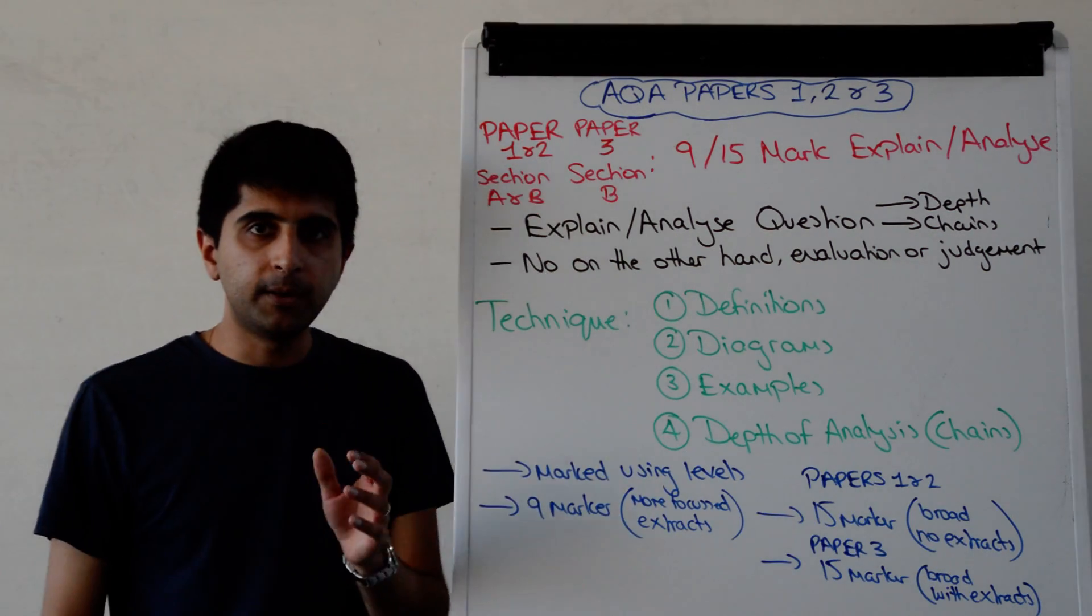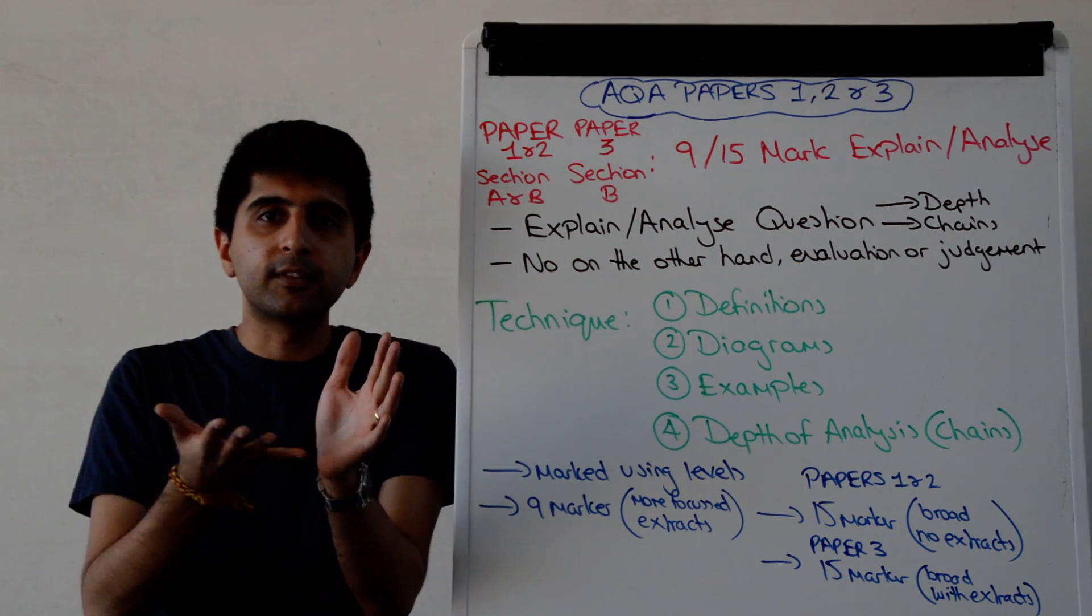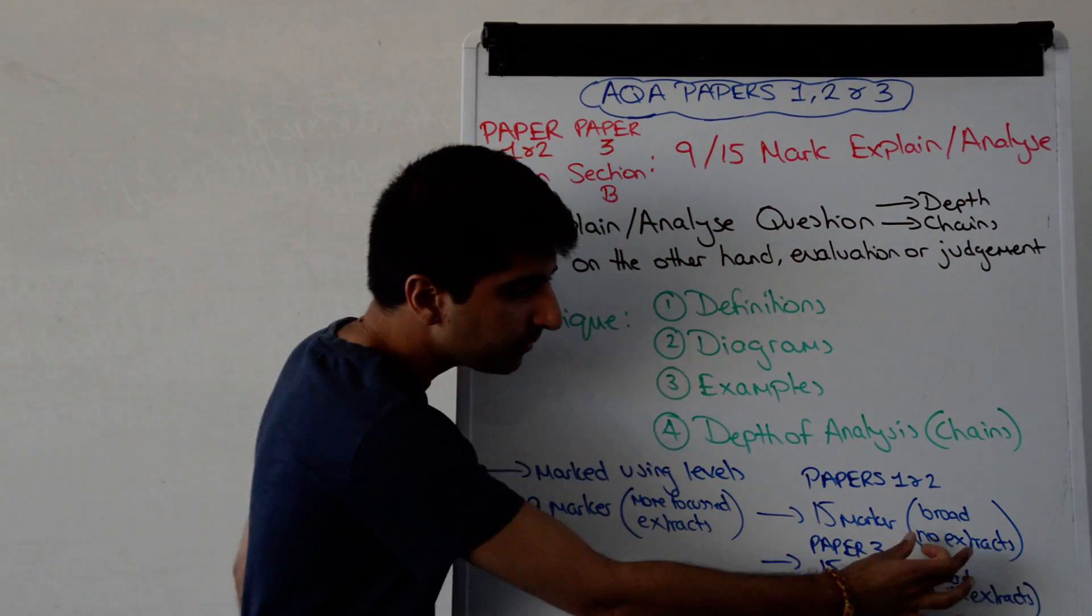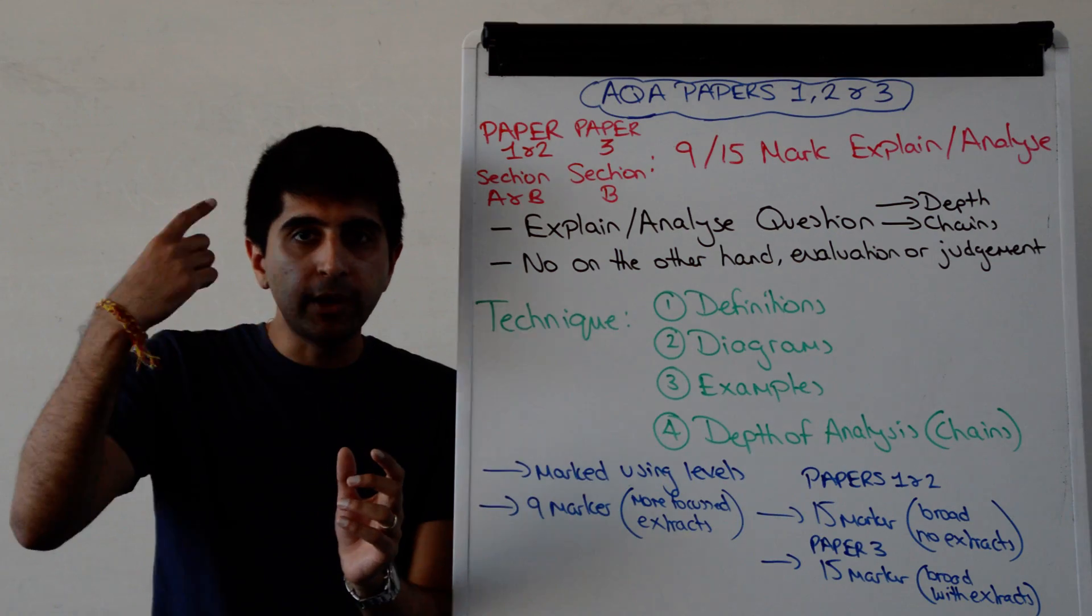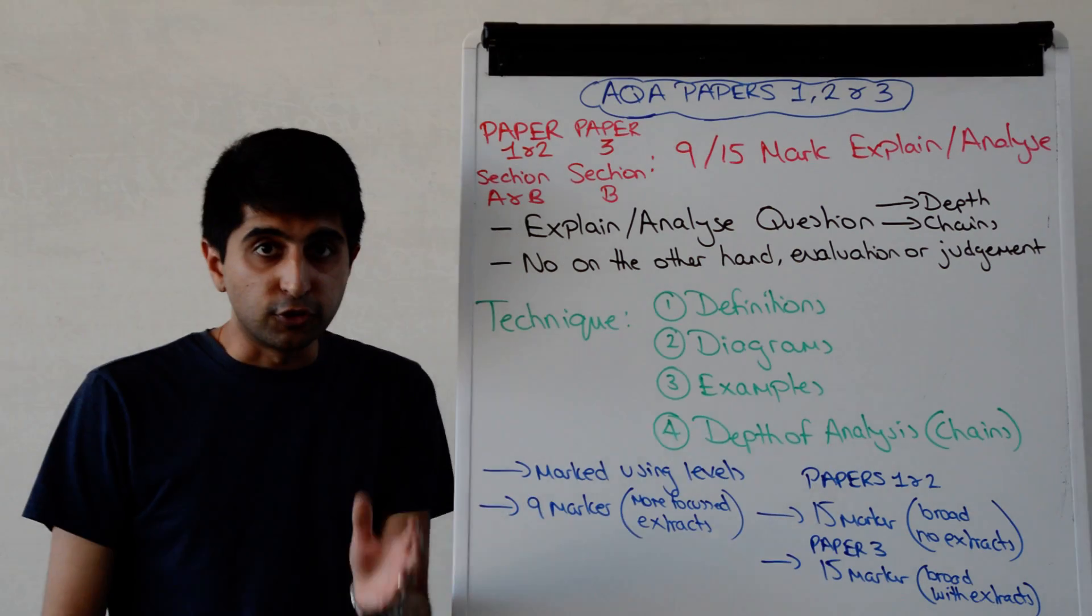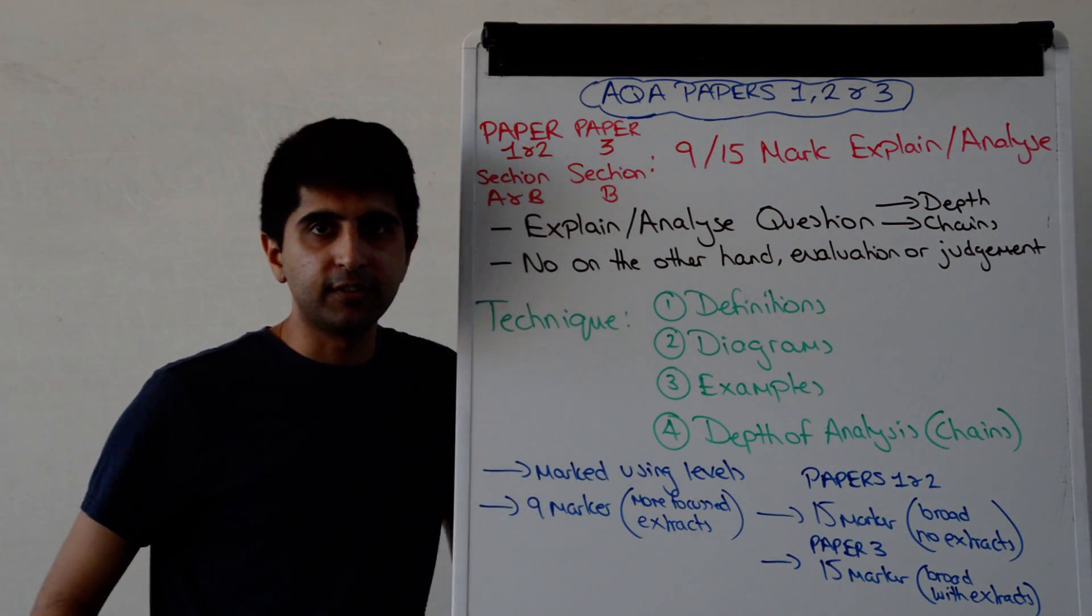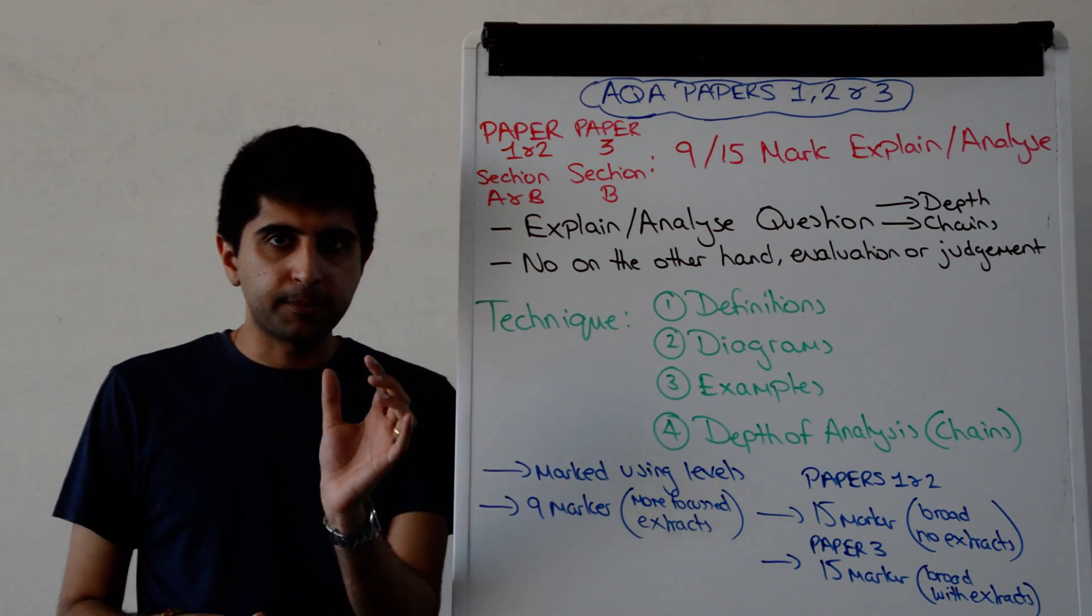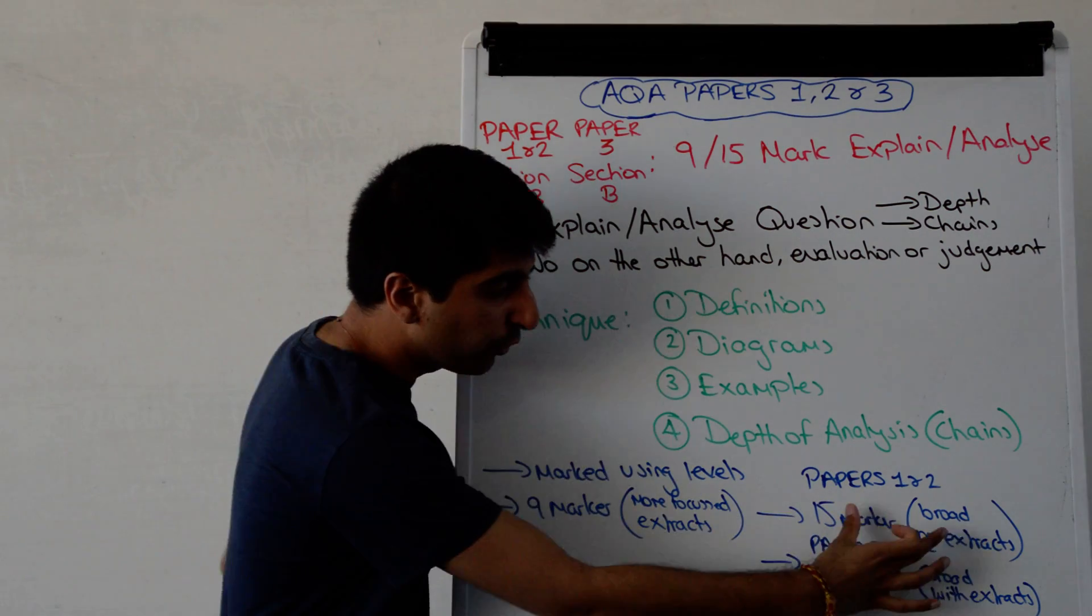The 15 marker in Papers 1 and 2 will be more broad. So maybe you can write three points to answer the question in detail with chains of analysis. But crucially, there'll be no extracts to help you. You'll need to apply with your own knowledge, with your own wider reading. The expectation of application is just as high as it is on the 9 marker. So just because you don't have any extracts, it doesn't mean that your application can be less. No. The application is expected to be just as strong, but from your own mind this time. You've also got more time. You've got 20 minutes for that 15 marker.